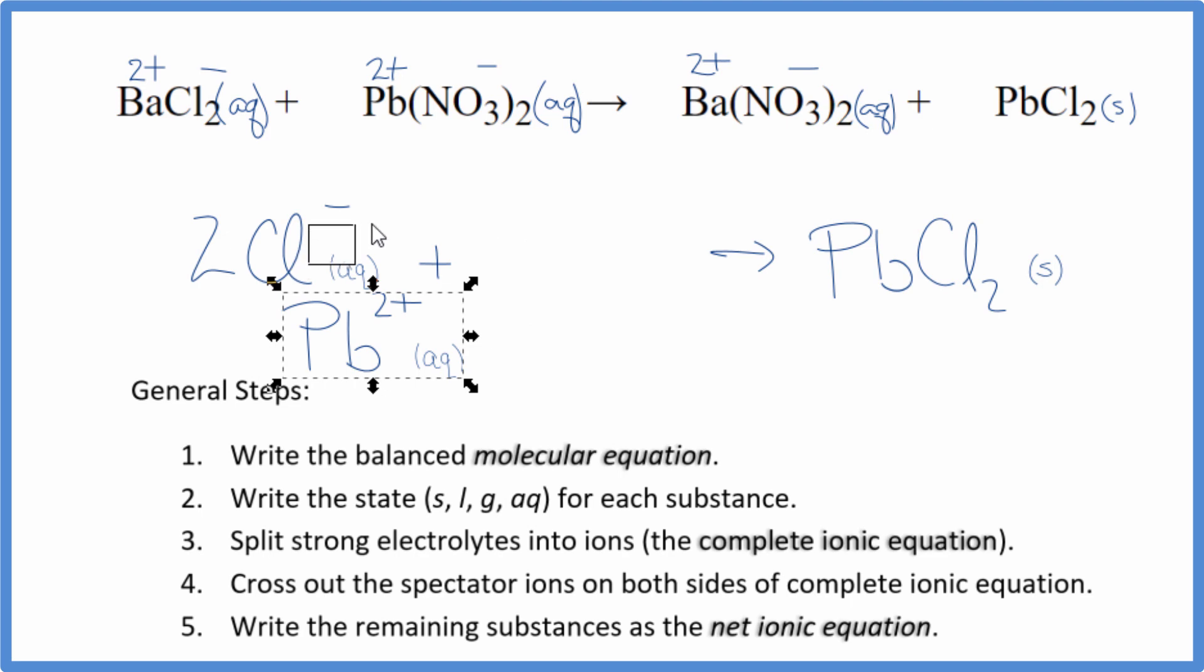Sometimes you'll see the positive ion written first with net ionic equations. Doesn't really matter. Looks a little nicer, I guess. That's it. This is Dr. B with the balanced equation for BaCl2 plus Pb(NO3)2. Thanks for watching.